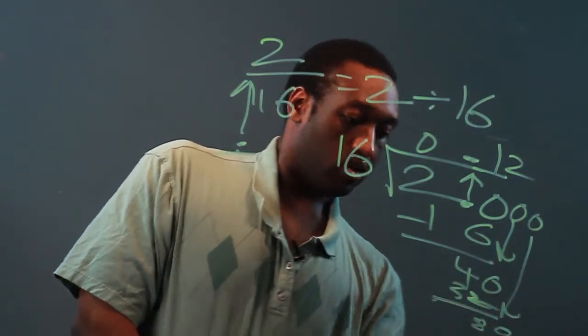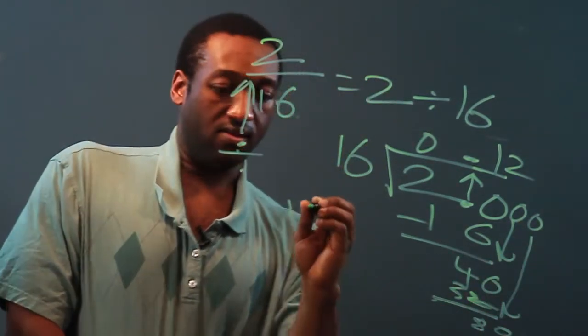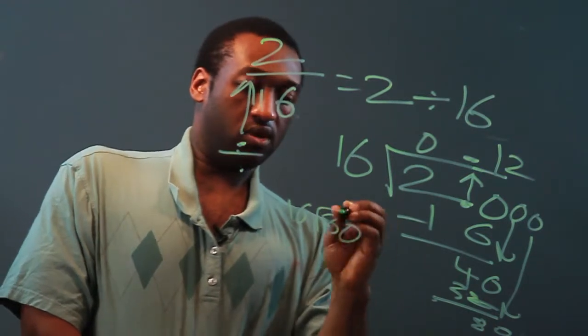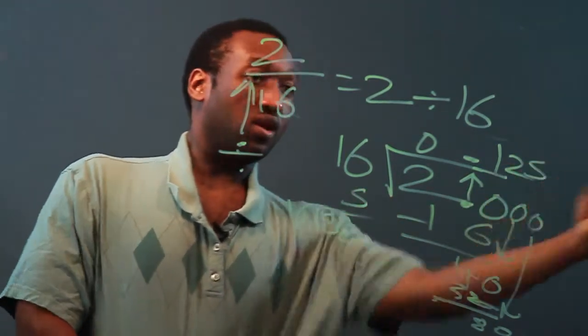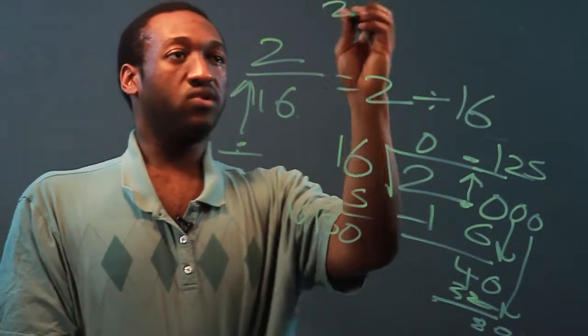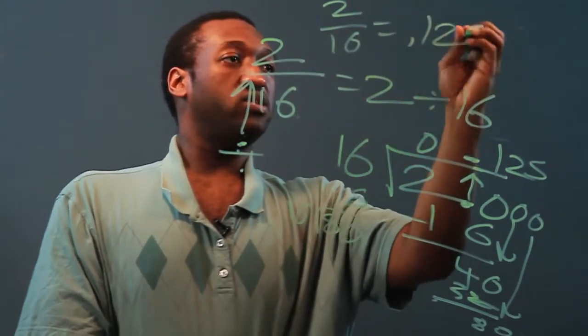Bring down a zero. Sixteenth into 80 is 5. So our decimal for 2 sixteenths is .125.